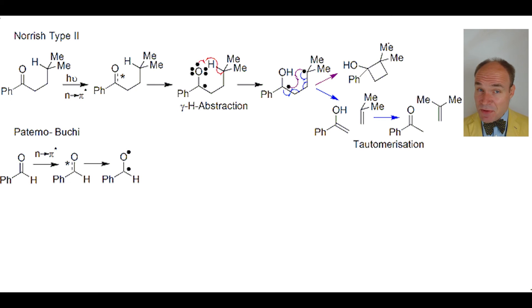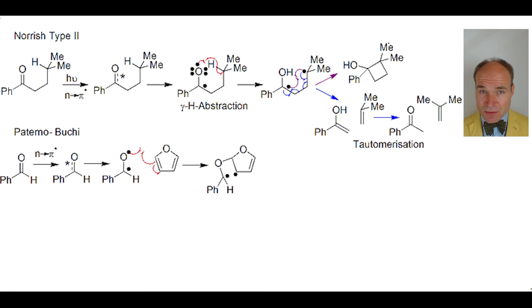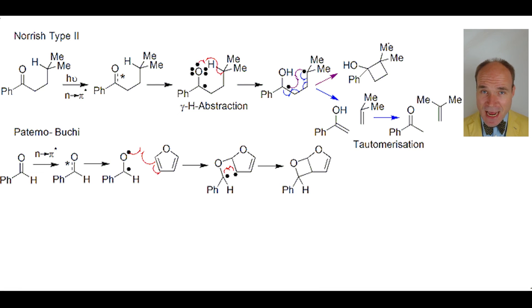This then reacts with a generic alkene. Here, specifically, it's a furan. The alkene's pi bond is homogeneously broken, with one of the electrons making a sigma-single bond with the oxygen radical, whilst the other alkene electron forms a sigma-single bond with the carbon radical to provide an oxetane. This is where we have a four-membered ring with single bonds made up of three carbons and one oxygen.